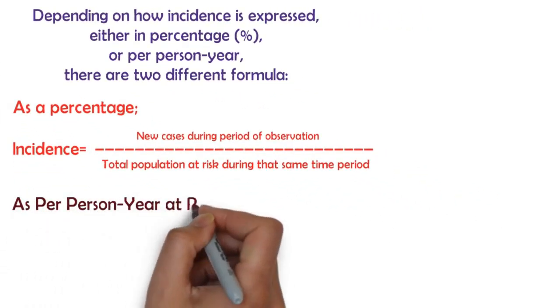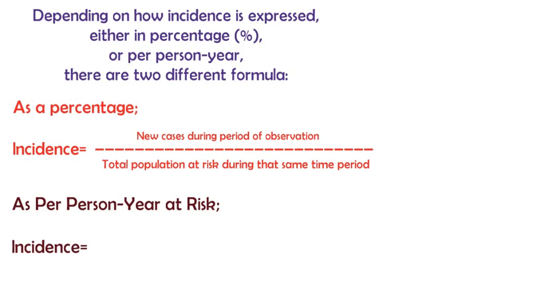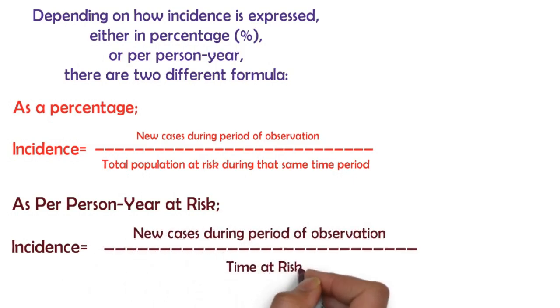To express incidence per person-year at risk: Incidence equals new cases during period of observation divided by time at risk.